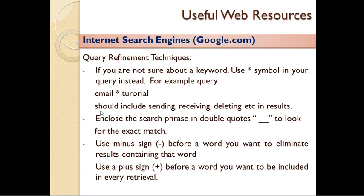The results should include: sending, receiving, deleting, etc. If you search 'email * tutorial', you will find: sending email tutorial, receiving tutorial, email deleting tutorial, etc. The asterisk finds all possible relevant words for the query.